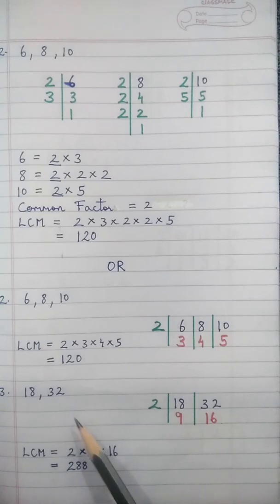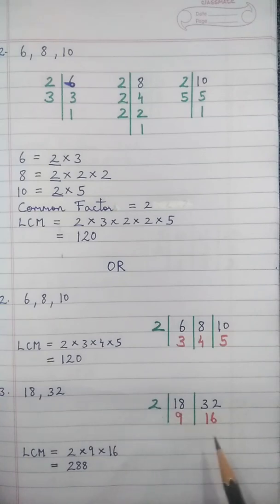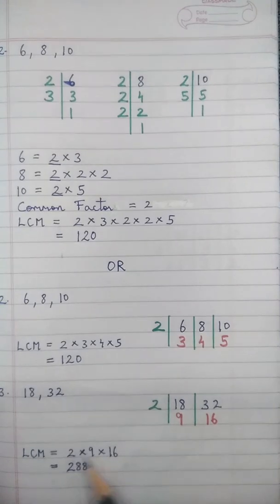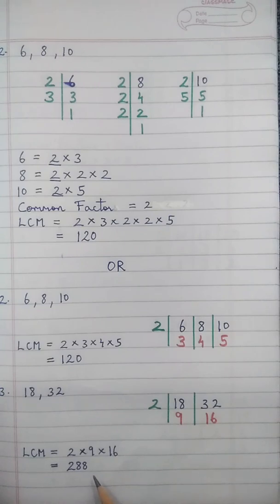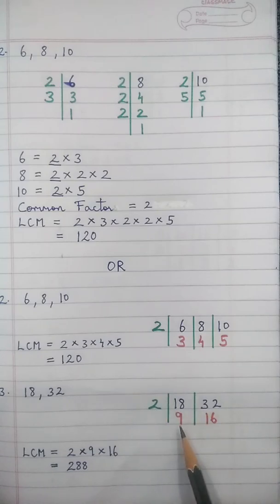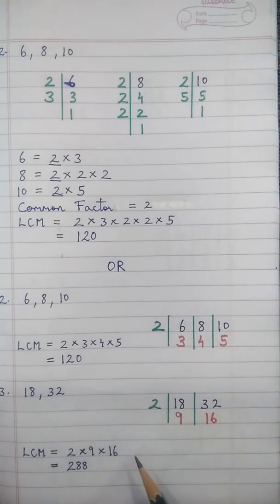Question number 3: 18 and 32. LCM is found as the left-hand side factor 2 into the remaining 9 and 16, giving 2 into 9 into 16, which is 288. We find the prime factors, identify the common factor, multiply the common factor with the remaining factors, and get the LCM — the least common multiple.